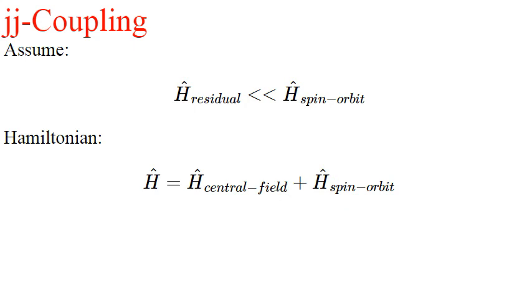JJ coupling. In JJ coupling we assume that the residual part of the Hamiltonian is much smaller than the spin-orbit part. In which case our Hamiltonian becomes this, which commutes with the individual total angular momentum of the electrons and their z components.